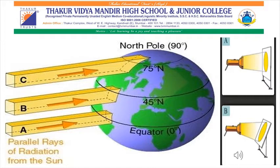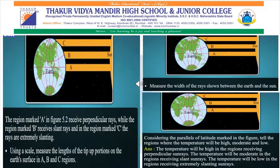Rays fall slanting near the poles. The region marked A in figure 5.2 receives perpendicular rays, while the region marked B receives slant rays, and in the region marked C the rays are extremely slanting. Using a scale, measure the length of the lit-up portions on the Earth's surface in regions A, B, and C. Measure the width of the ray shown between the Earth and the Sun. Considering the parallels of latitude marked in the figure, identify the regions where the temperature will be high, moderate, and low.